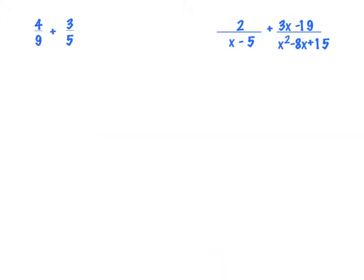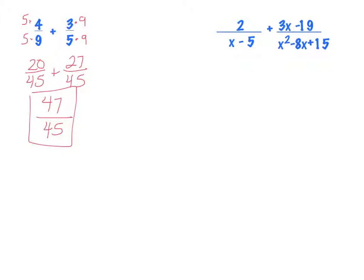Let's try one that does not have a common denominator. To refresh your memory with numbers: if you have two fractions to add without a common denominator, you find something both denominators go into. For 4/9 plus 3/5, both 9 and 5 go into 45. Multiply each fraction to get 20/45 plus 27/45, then add the numerators to get 47/45. That doesn't reduce, so you're done. Now let's try it with rational expressions with variables.